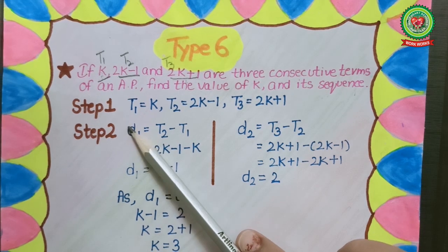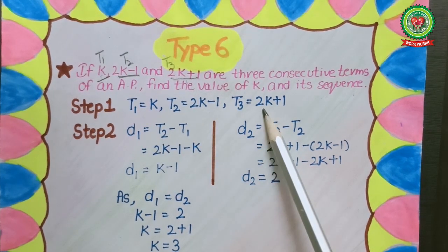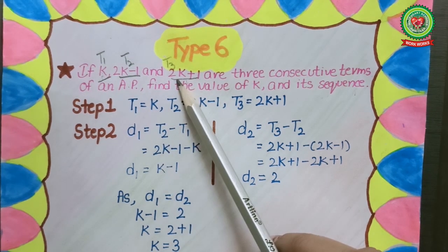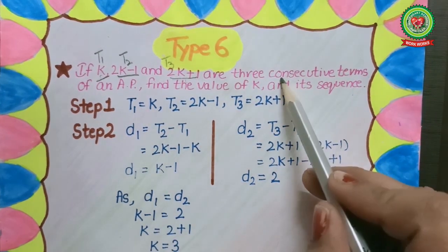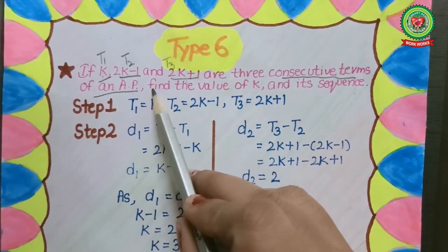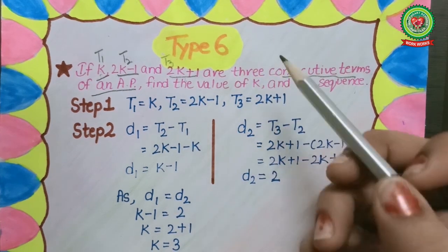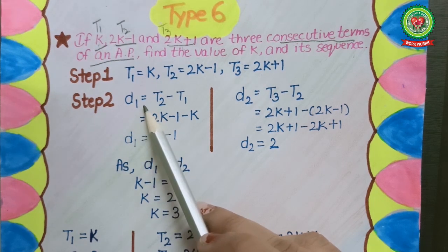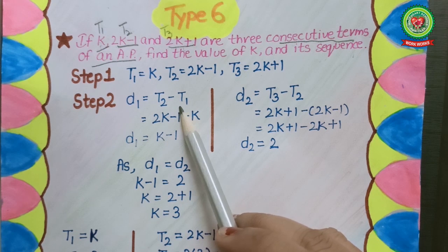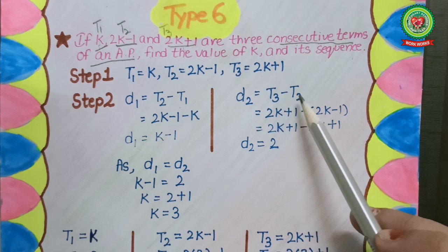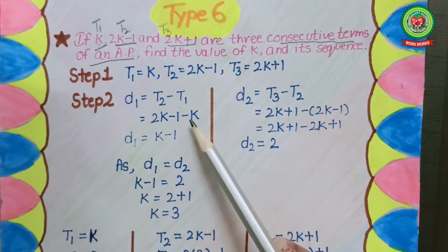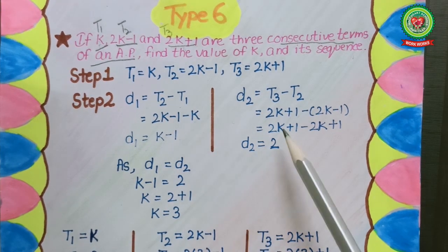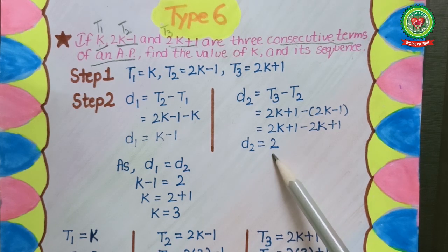Step one: always write the given terms t1, t2, and t3. Step two: as we know our first term is unknown, the other two terms are also unknown. Since consecutive terms are in AP, their common difference is the same. We will find the common difference of consecutive terms. Formula for d1 is t2 minus t1, and formula for d2 is t3 minus t2. Putting in the values, first common difference is k minus 1, and second common difference is equal to 2.